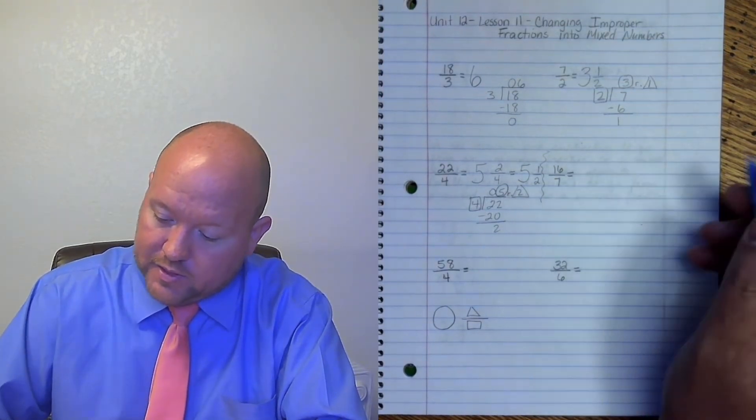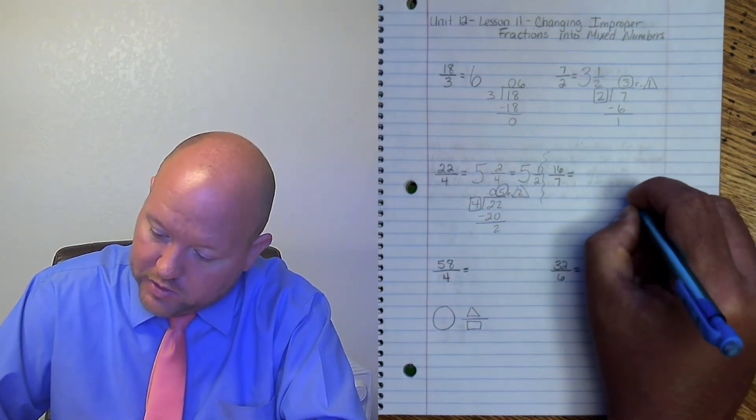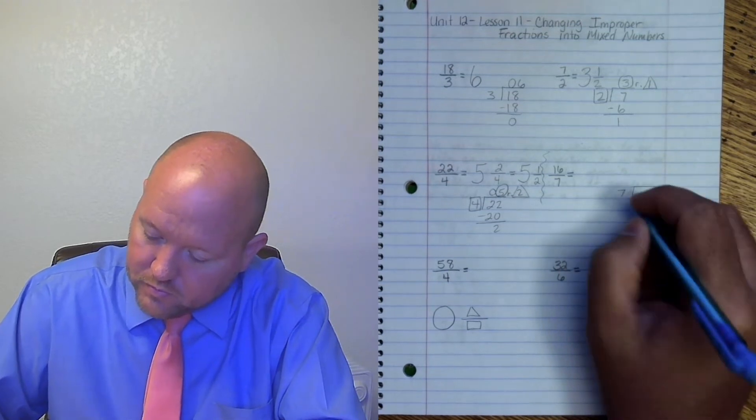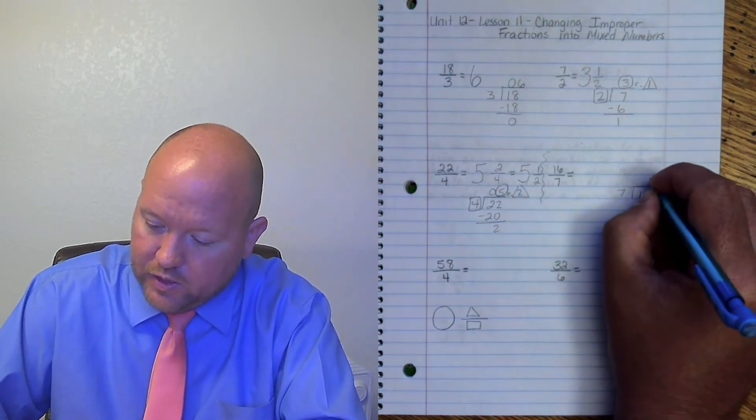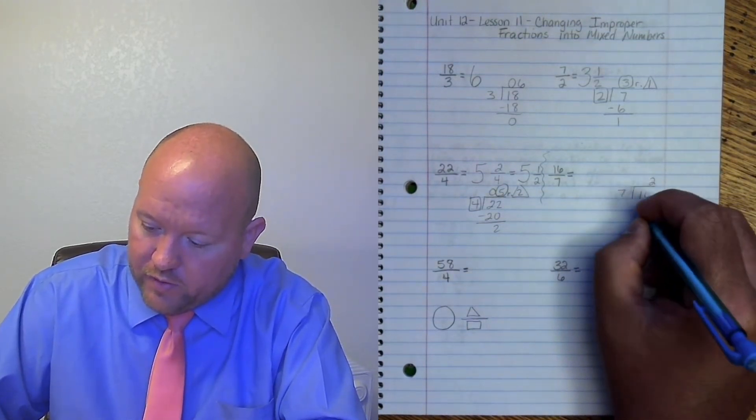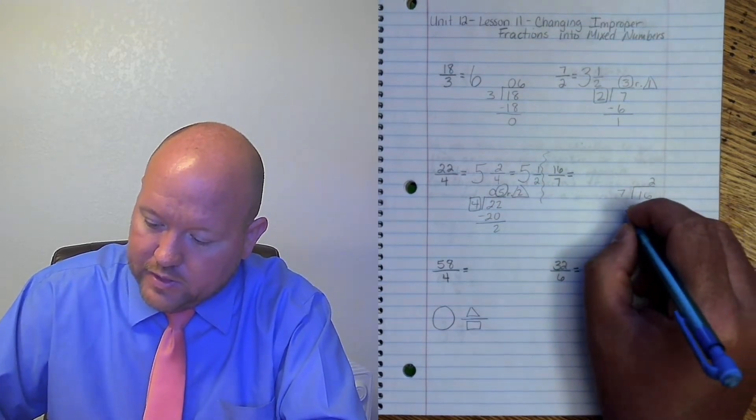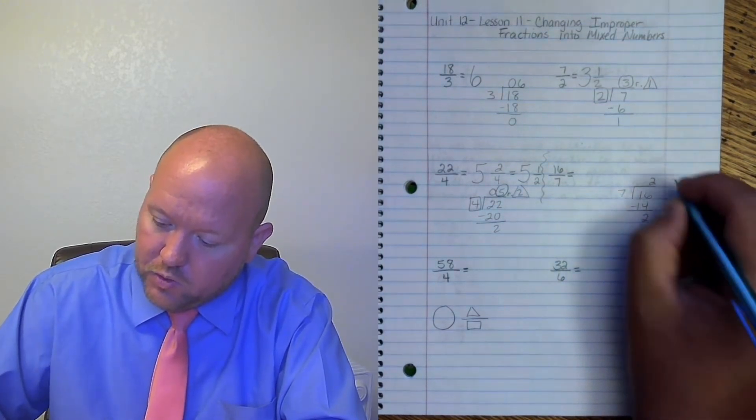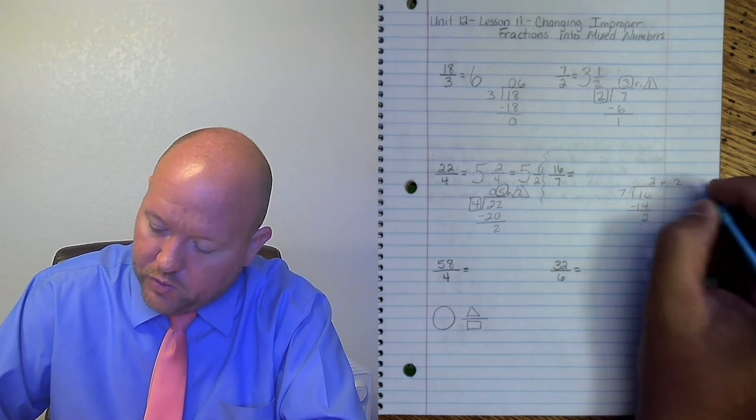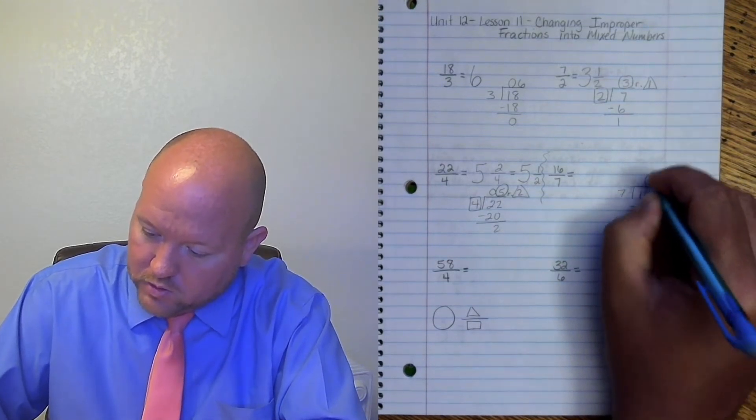Here we have 16 sevenths. So 16 goes inside the algorithm. 7 goes into 16 two times. 2 times 7 is 14. 16 minus 14 is 2. Remainder 2. Triangle circle square.